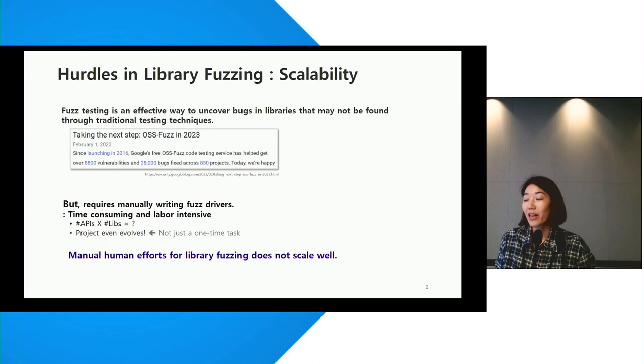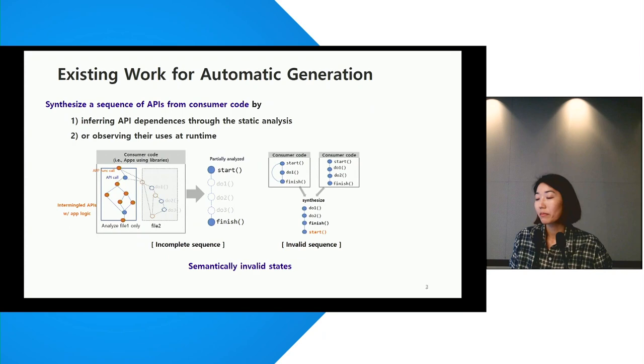However, this process requires manually writing fuzz drivers, which is time-consuming and labor-intensive. Considering the number of APIs to test and the fact that projects are ever-evolving, many human efforts for library fuzzing does not scale well.